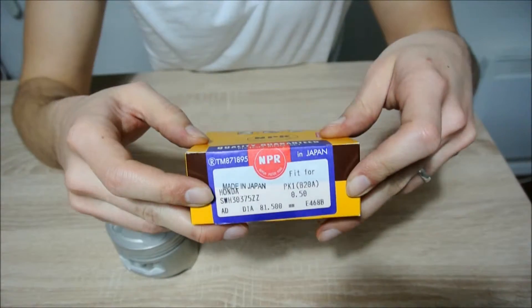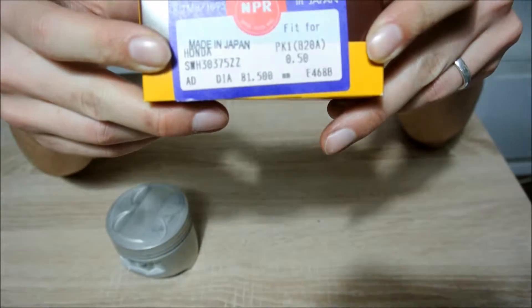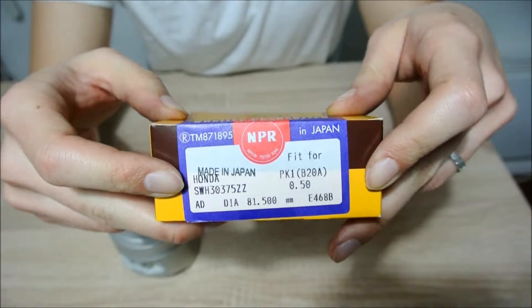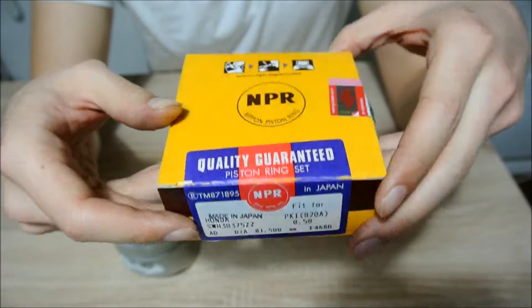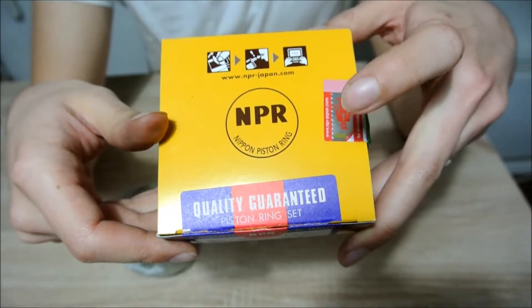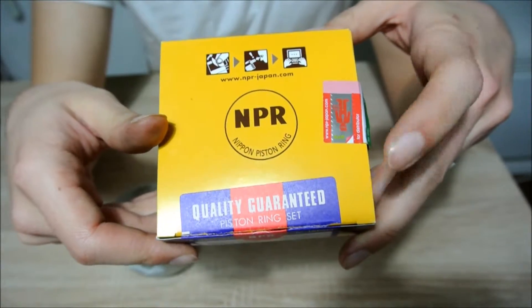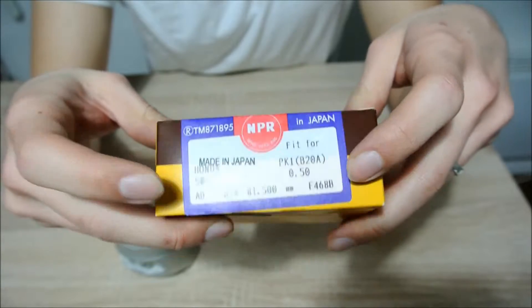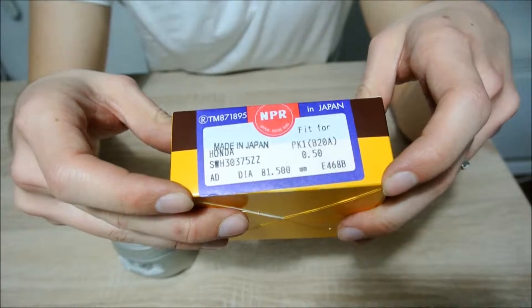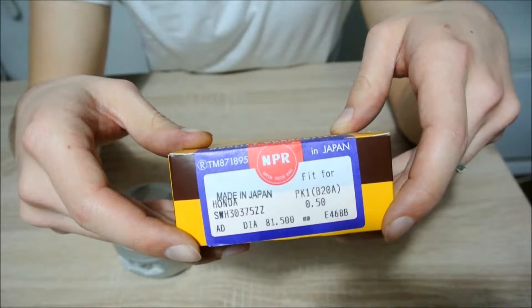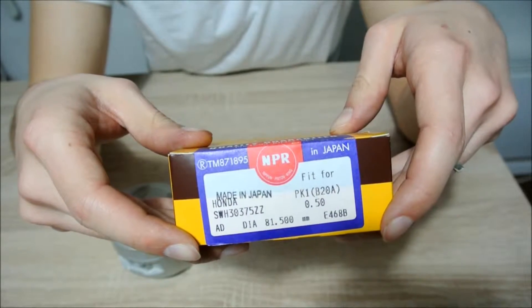This is an MPR piston ring set, a high quality brand. MPR is well known and is actually the OEM supplier to many Japanese automobile manufacturing companies. As you can see it says Honda here and this is actually a set for the third generation of Honda Prelude.